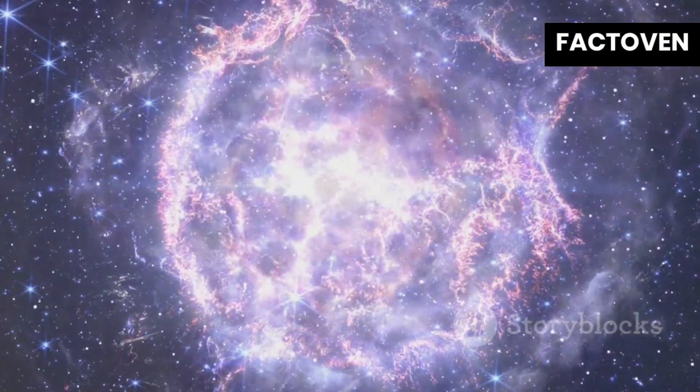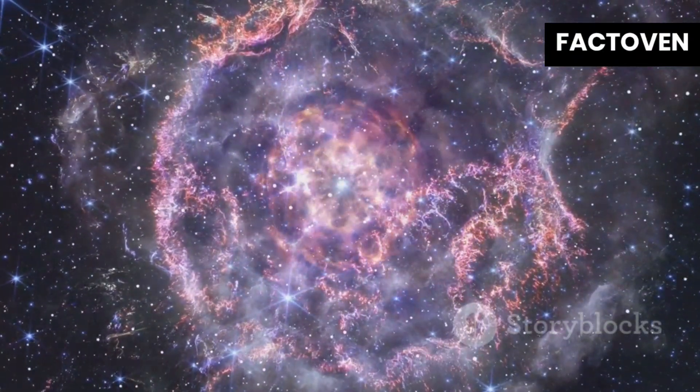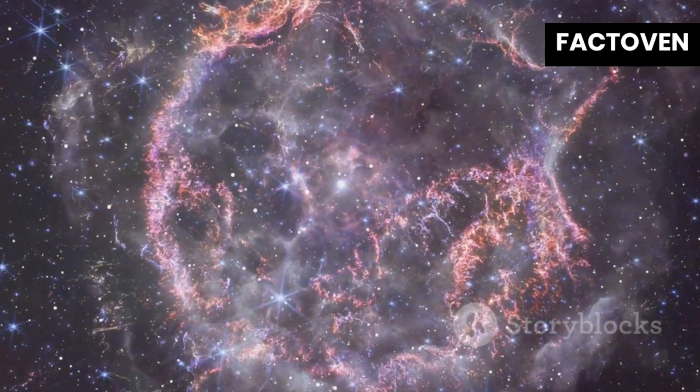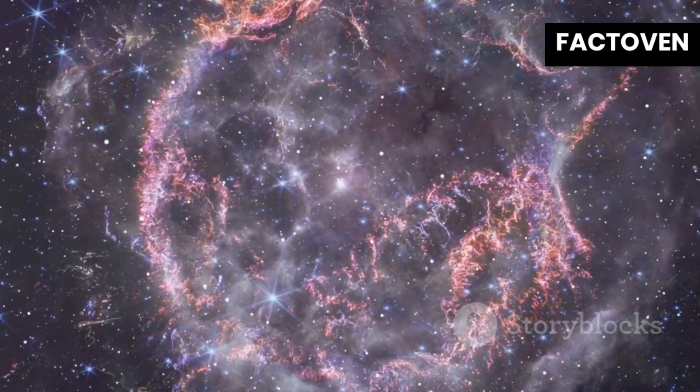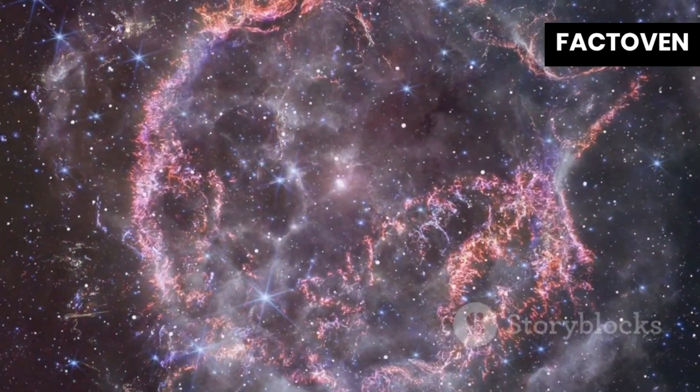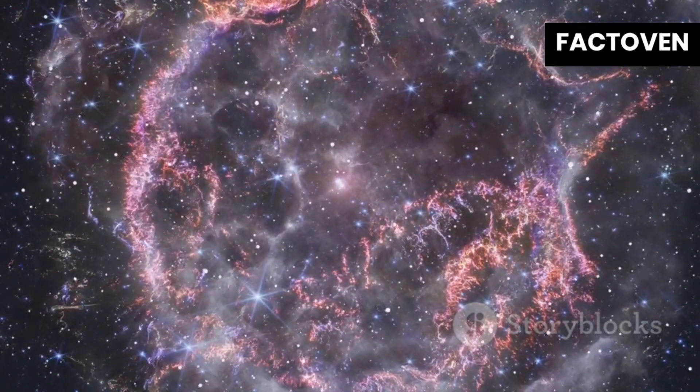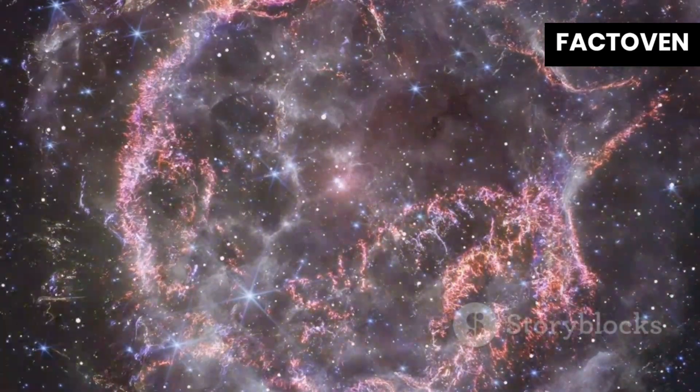Black holes are formed when massive stars collapse at the end of their lives, their cores imploding under their own gravity. This catastrophic event, often marked by a supernova explosion, leaves behind a dense core that becomes a black hole.